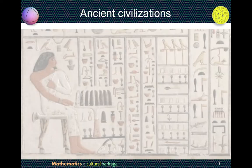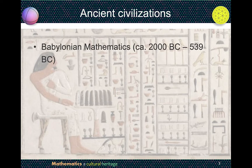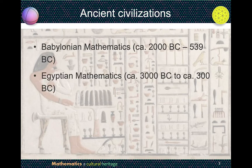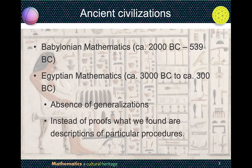In the previous lectures as well as tutorials, we learned about different ancient civilizations — for example, Babylonians, Egyptians, as well as Chinese mathematics. Some characteristics include lack of generalizations. Instead of proofs, what we find are descriptions of particular procedures.